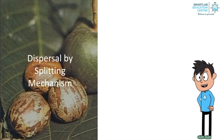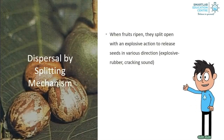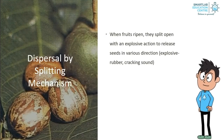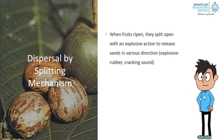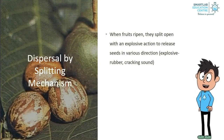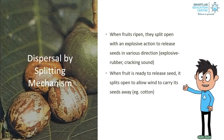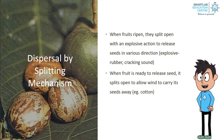Dispersal by splitting mechanism. When the fruit ripens, it splits open with an explosive action to release seeds in various directions. An example would be rubber, which splits open with a cracking sound. When the fruit is ready to release its seed, it splits open to allow wind to carry its seeds away. An example would be cotton.